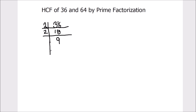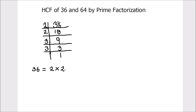Now 9 is an odd number, it is divisible by the next prime number 3. 3 times 3 is 9, and 3 is divisible by 3 only — 3 times 1 is 3. So the prime factors of number 36 are 2 times 2 times 3 times 3. These are all the prime factors of number 36.